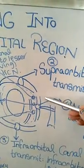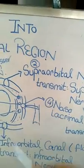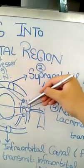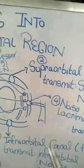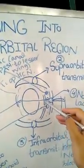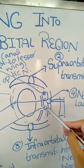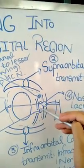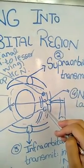Located in the medial wall of the orbital region is another opening called the nasolacrimal canal. Nasal relates to the nose and lacrimal relates to the lacrimal sac and gland. Communicating the lacrimal and nasal regions in the medial wall, this canal transmits the nasolacrimal duct, which carries fluid from the eye into the nose. The fifth opening, posterior to the maxilla and lesser wing of the sphenoid bone, is the inferior orbital fissure, which transmits the maxillary nerve and its zygomatic branches.